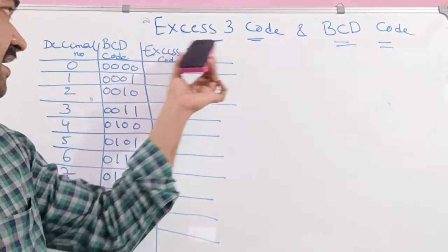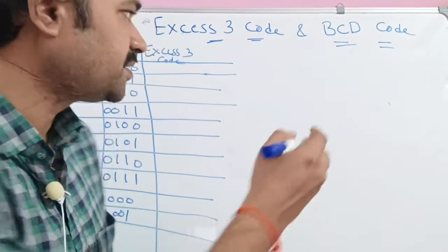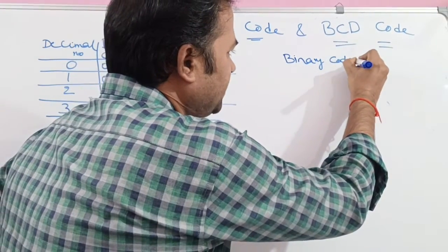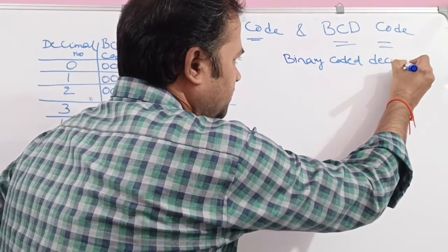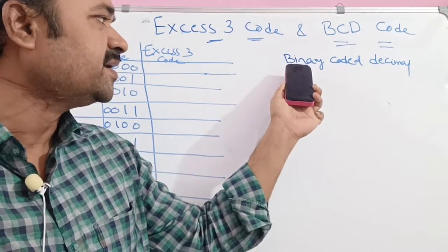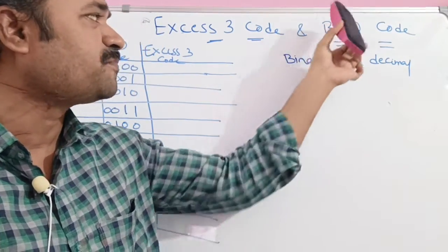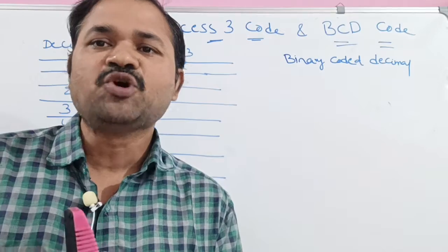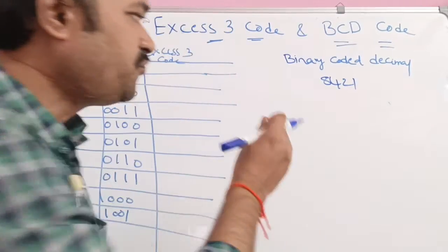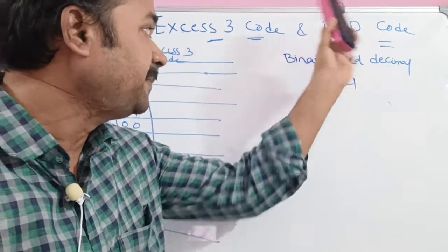Now let us discuss about XS3 code. We know what is BCD code. BCD stands for Binary Coded Decimal. The name itself specifies the meaning — a decimal number is coded in binary form. A decimal number is represented in binary form in BCD notation. The most commonly used BCD notation is 8421 notation, and we can represent a decimal digit with the help of 4 bits.